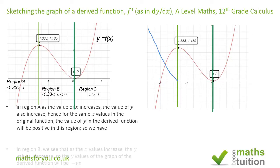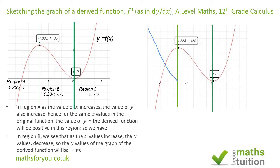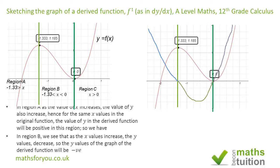For Region B, the x value is increasing whereas the y value of this function is decreasing — going from about 1.185 down to 0. This means the y coordinates of the graph of the derivative of this function are going to be less than zero.